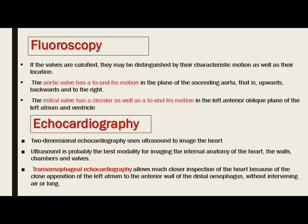Fluoroscopy is usually used for valvular heart disease. If the valves are calcified, they may be distinguished by their characteristic motion as well as their location. The aortic valve has a to-and-from motion in the plane of the ascending aorta, upward, backward and to the right. The mitral valve has a circular as well as to-and-from motion in the left anterior oblique plane of the left atrium and ventricle. Each valve has a characteristic motion, and by its specific location it can be diagnosed. If valves are seen by fluoroscopy, they are calcified and therefore abnormal.